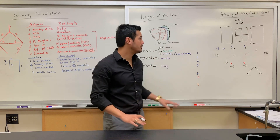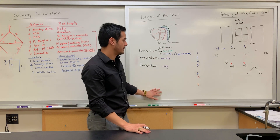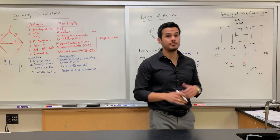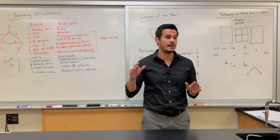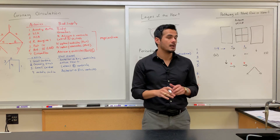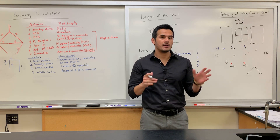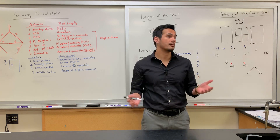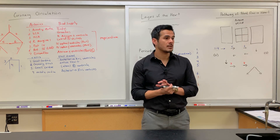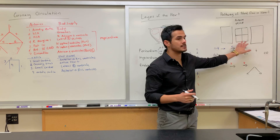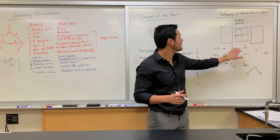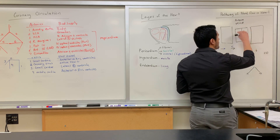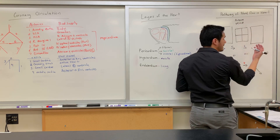Now let's move on to the pathway of blood flow. You've already familiarized yourself with the anatomy identifying the structures, so now we're going to put it together and see where blood flows within the heart. This is a schematic representing the heart — the atria are on top and the ventricles are on the bottom.